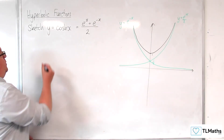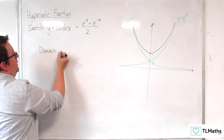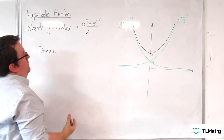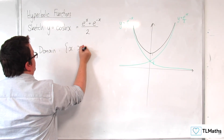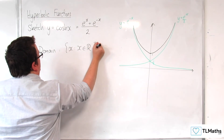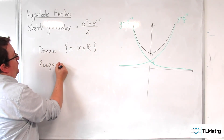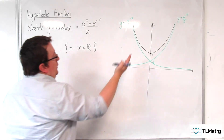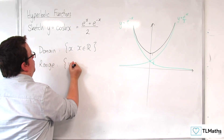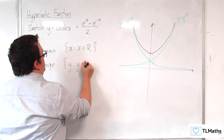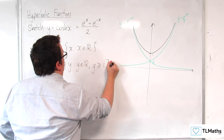We can then write down the domain — it can reach any real value of x, written in set notation. And its range, as we can see from the graph, is from 1 and upwards. So y is such that y belongs to the real numbers, but y is greater than or equal to 1.